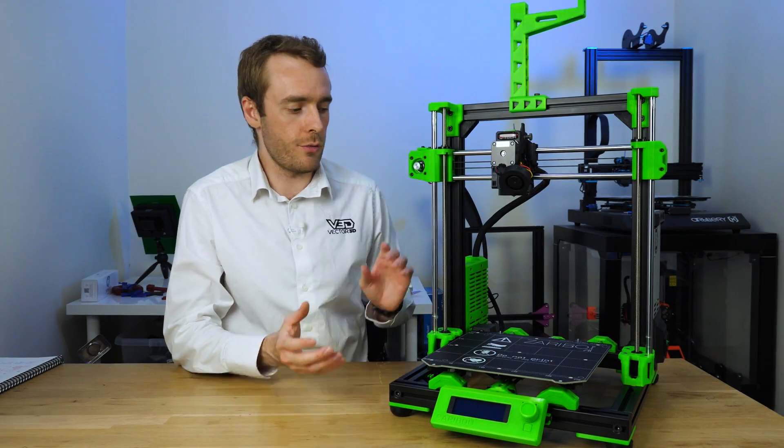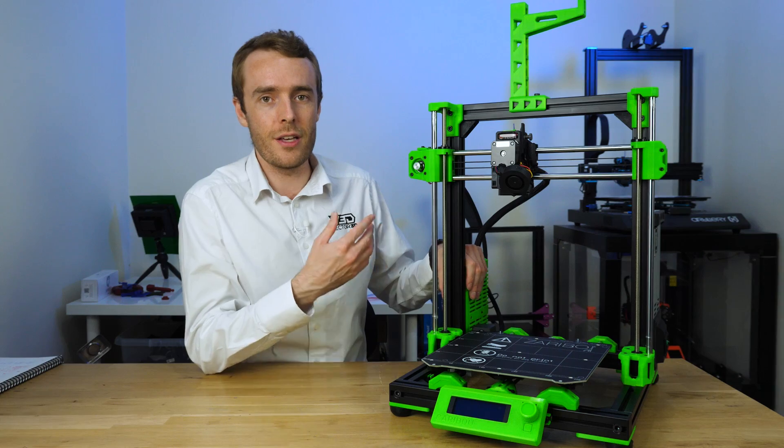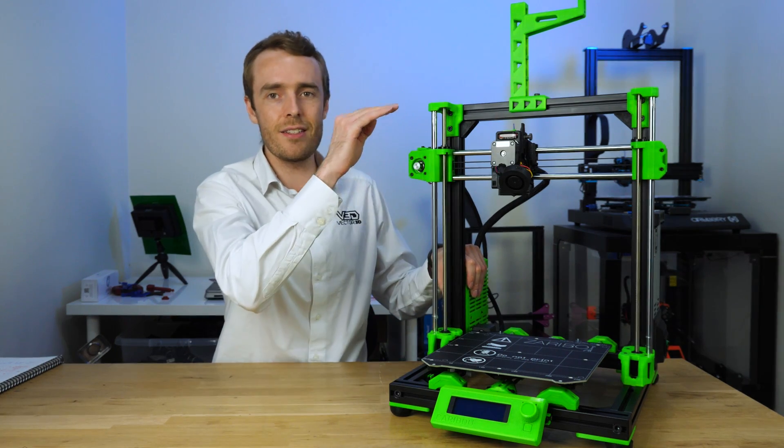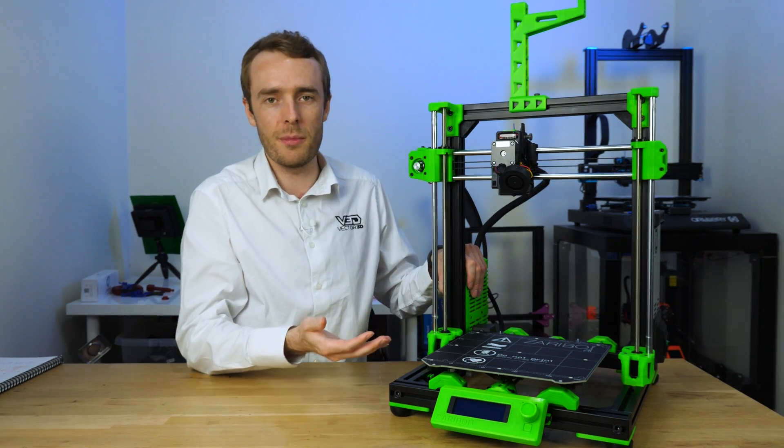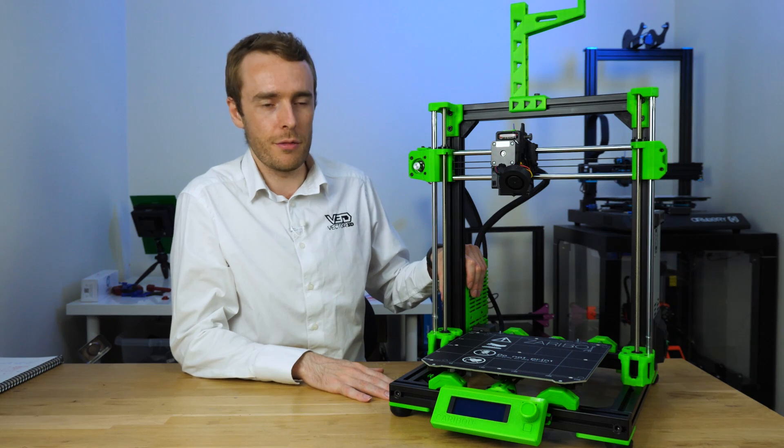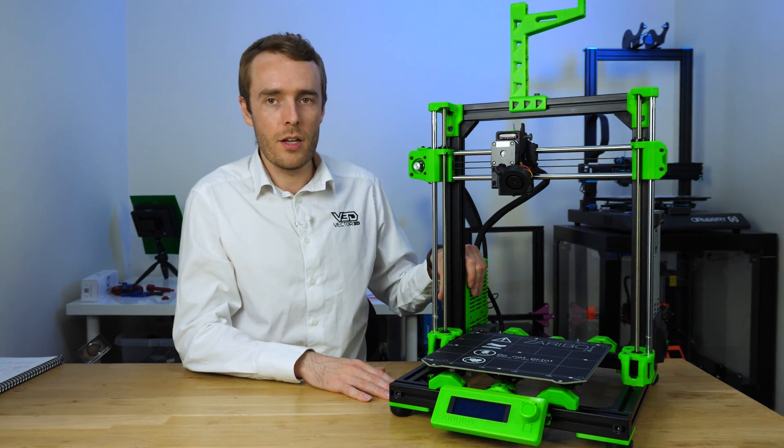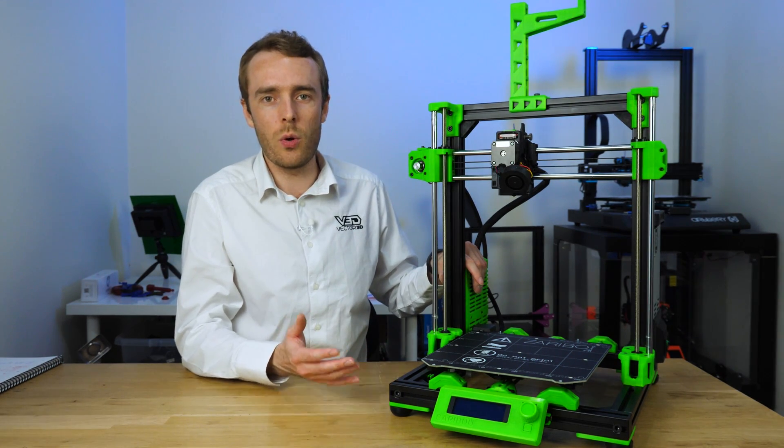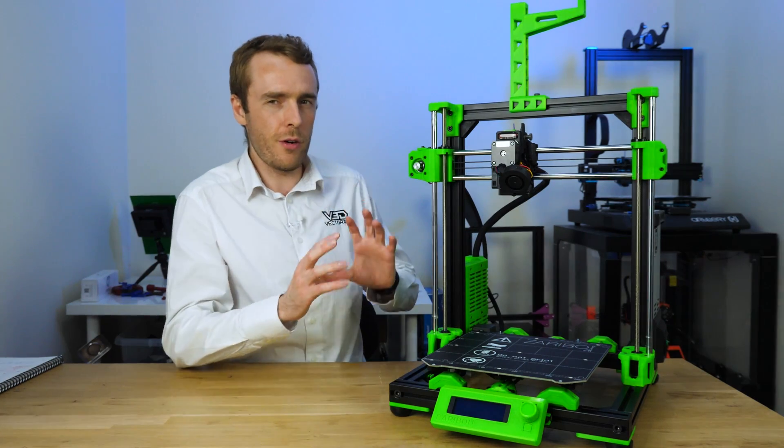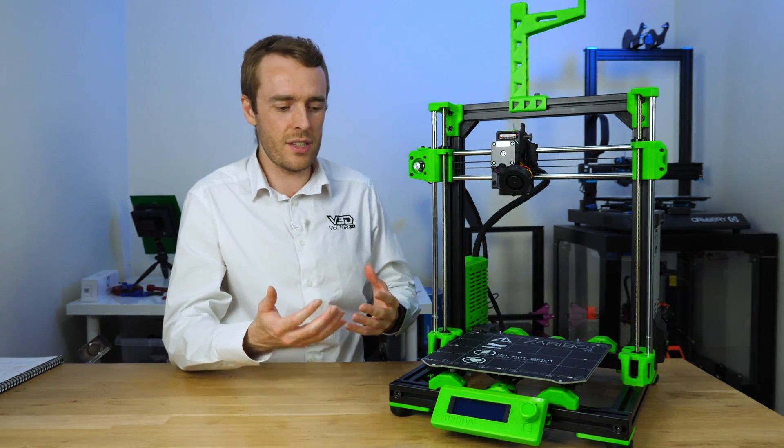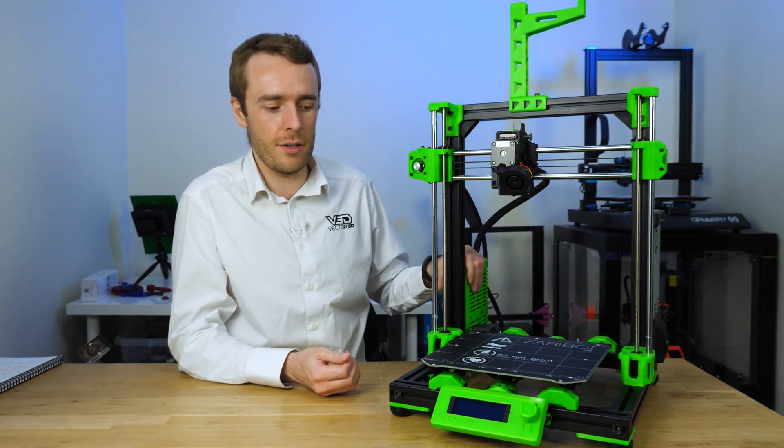So the Caribou MK3S320 then, so called because the 320 refers to the extended z-height up to 320 millimeters. Fairly self-explanatory. From a distance these printers do look really quite similar, there's a lot of configuration that from a distance does look the same, but let me point out some of the key differences.